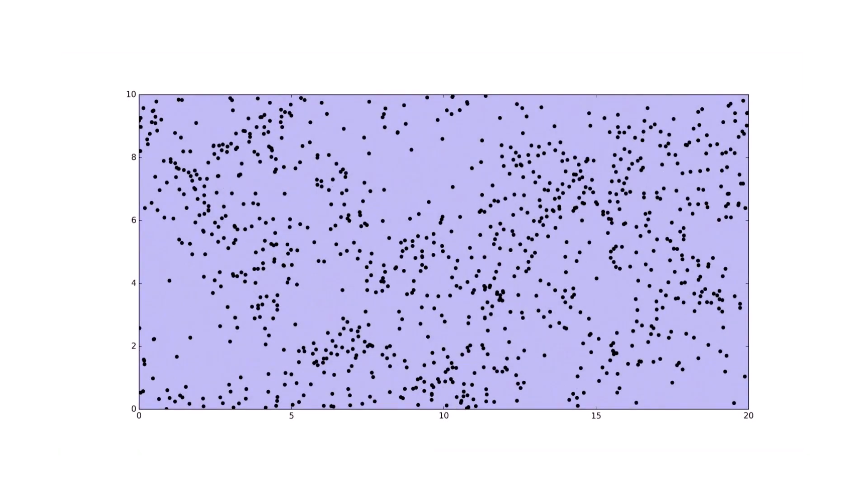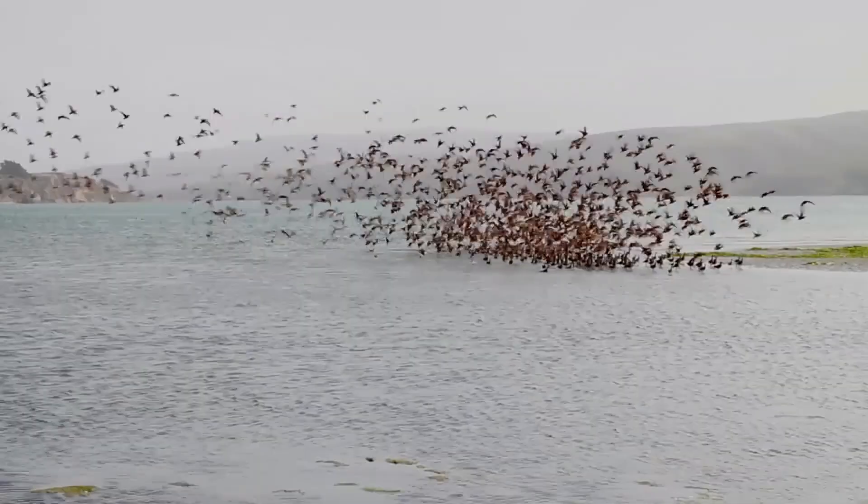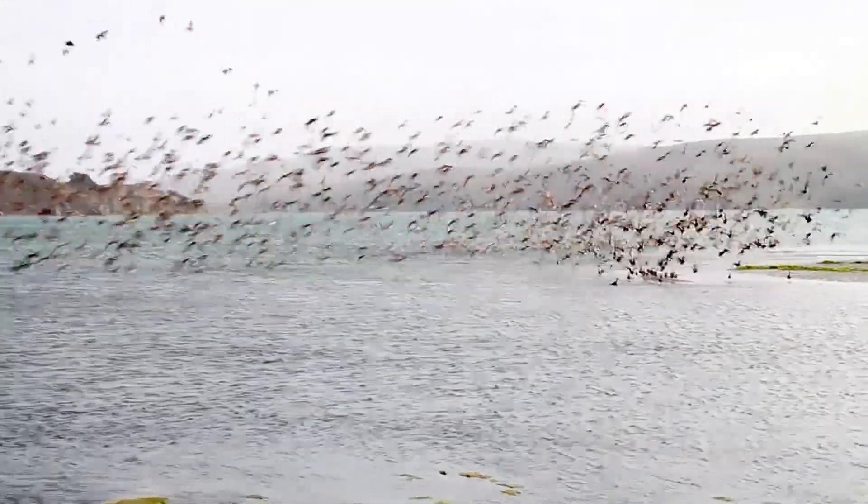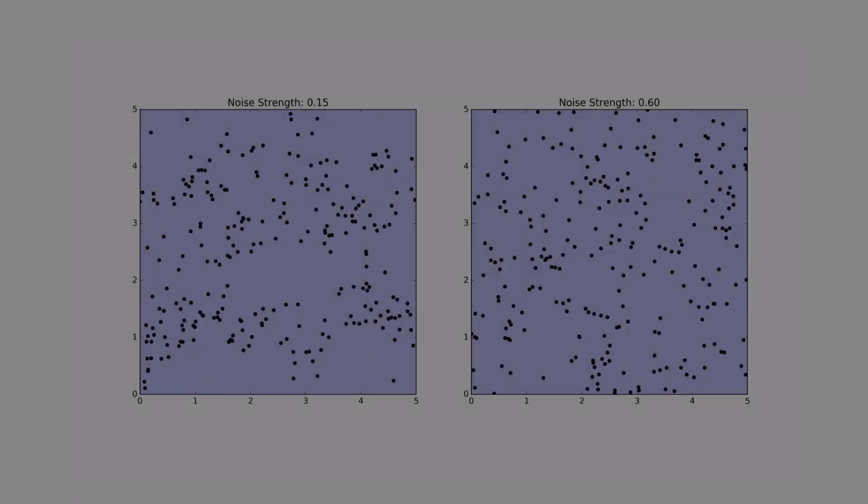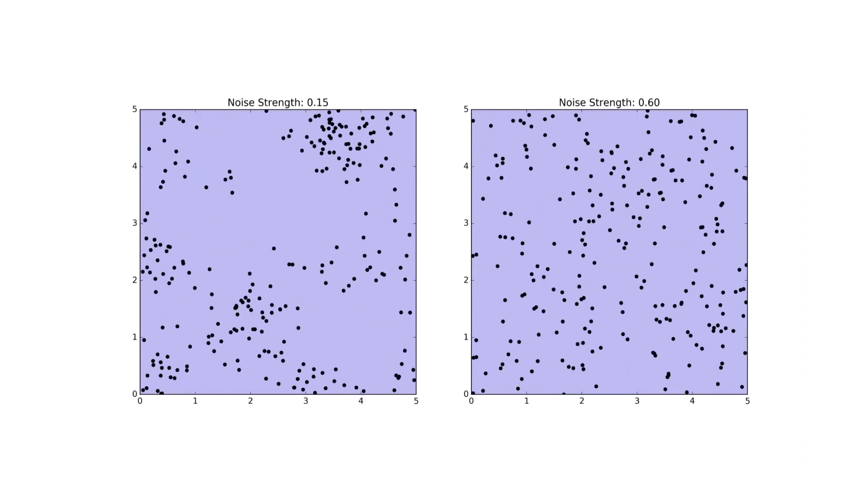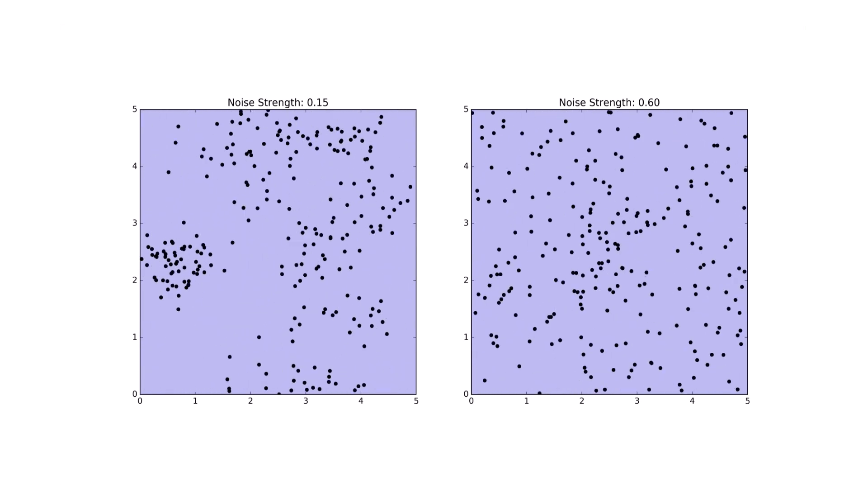Here's what the model looks like in action. It's pretty similar to a real swarm of birds. The motion of the birds is very sensitive to the noise strength in the model. Here we see the behavior with two different values of the noise strength. On the left, we see the model at a noise strength of 0.15.